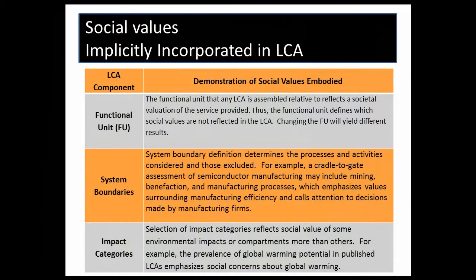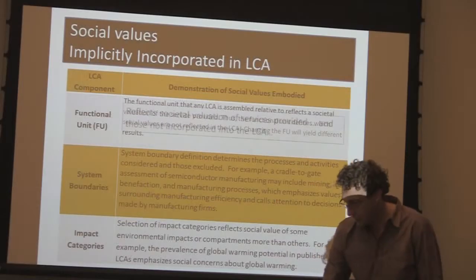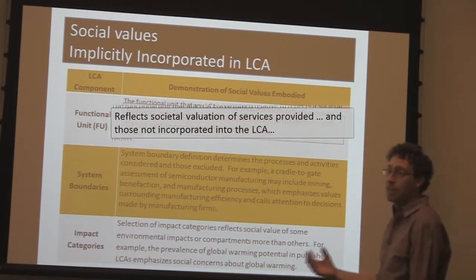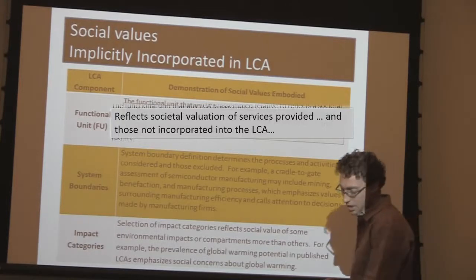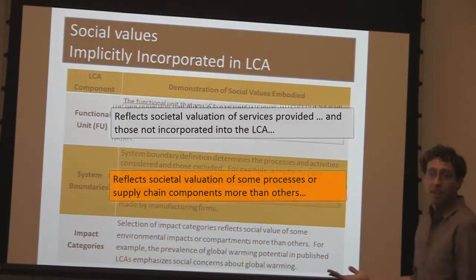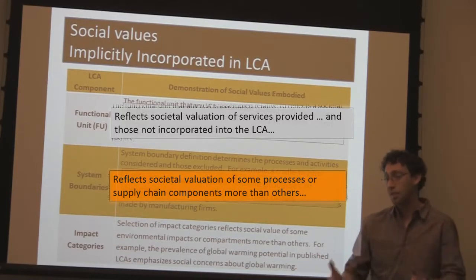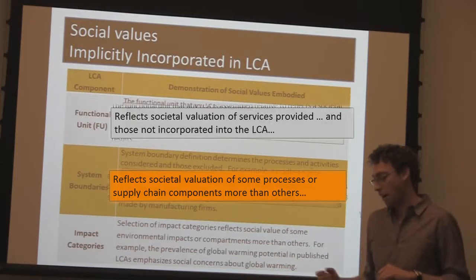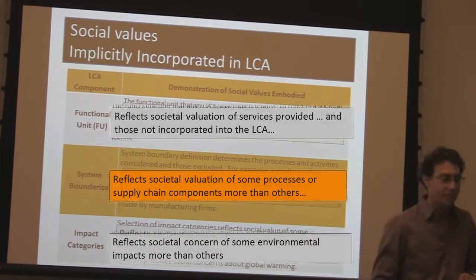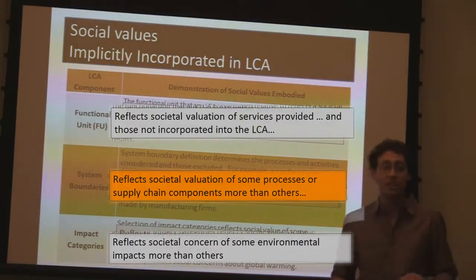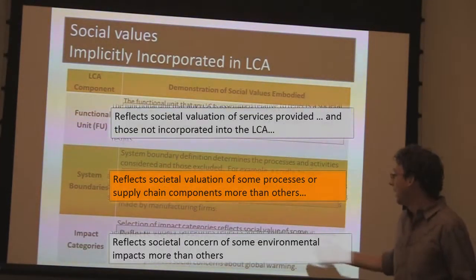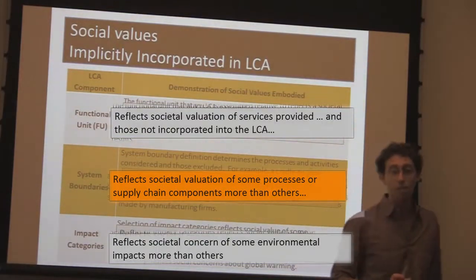Part of this is recognizing that social values are implicit in life cycle assessment. There are many ports of entry through which social decisions are made, though not made explicitly. For example, the functional unit reflects the social value of some service provided to society, and choosing it determines which services get accounted for in the LCA. Similarly, system boundaries reflect which processes are valued, and impact category selection reflects social valuation of some impacts over others — for instance, many LCAs focus on greenhouse gas equivalents, reflecting a larger concern for global warming.